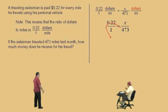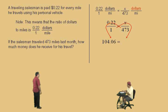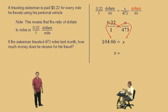Cross multiply. Very nice. So, what's 473 times 0.22? 104.06. Very nice there, Charlie. And what's 1 times x? x. Very nice there, Charlie. So, he receives $104.06.